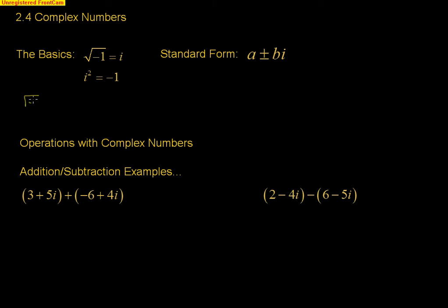If I have the square root of negative 4, we're going to pull that negative 1 out. So, that negative 1 right there, the square root of negative 1 is i, and the square root of 4 is plus or minus 2.